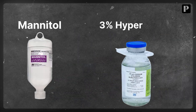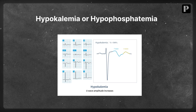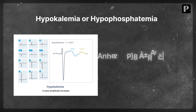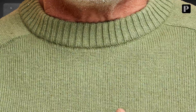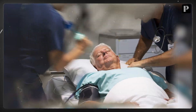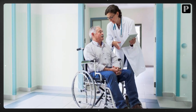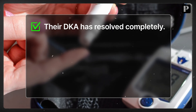Watch out for further complications. Cerebral edema can be treated with mannitol or 3% hypertonic saline. Hypokalemia or hypophosphatemia can be managed with appropriate potassium and phosphate replacement. If cardiac arrhythmia occurs, monitor and treat accordingly.